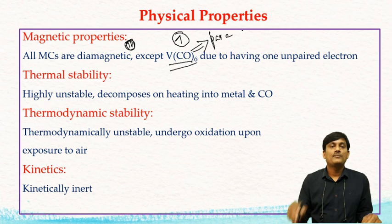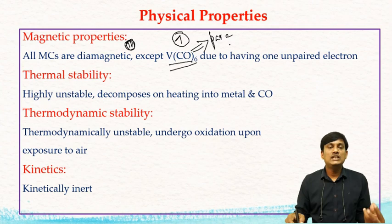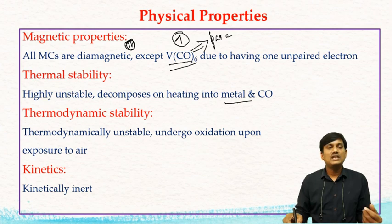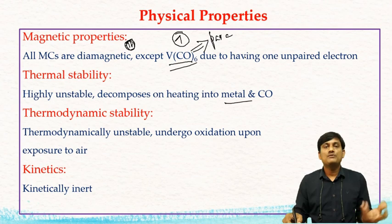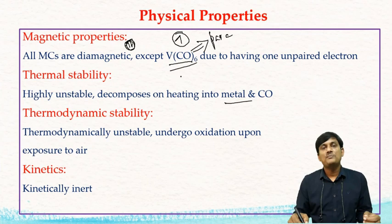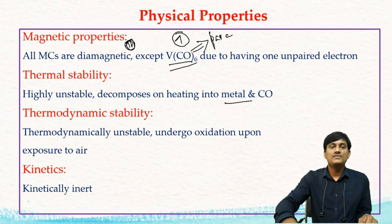Regarding thermal stability, metal carbonyls are highly unstable and decompose on heating into metal and carbon monoxide. Regarding thermodynamic stability, when exposed to air there is oxidation of metal carbonyls, and CO is converted into CO₂. If you take kinetics, these complexes are kinetically inert. So metal carbonyls are thermodynamically unstable but kinetically very inert. These are the physical properties of metal carbonyls.